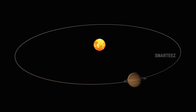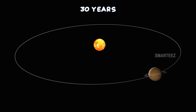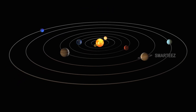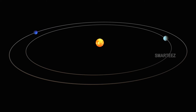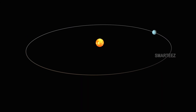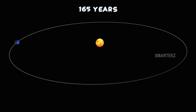The sixth planet from the sun is Saturn. This gaseous planet takes about 30 years for one revolution around the sun. The seventh and eighth planets are the icy planets. They are so far away from the sun, so they take very long time. Uranus, the seventh planet, takes 84 years. And Neptune, the eighth planet, takes 165 years for one revolution around the sun.